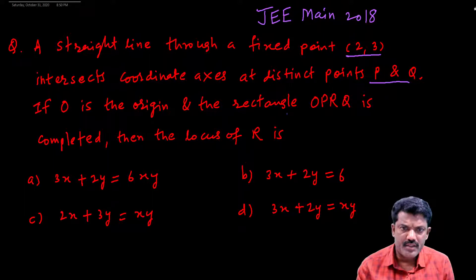If O is the origin and the rectangle OPRQ is completed, then we have to find the equation of locus of point R.